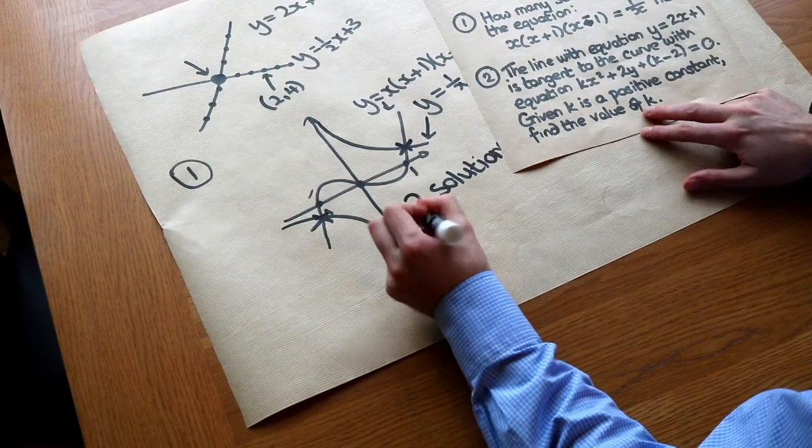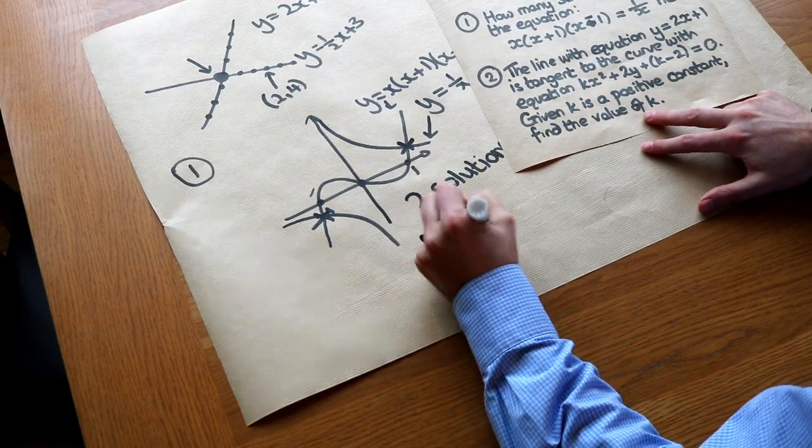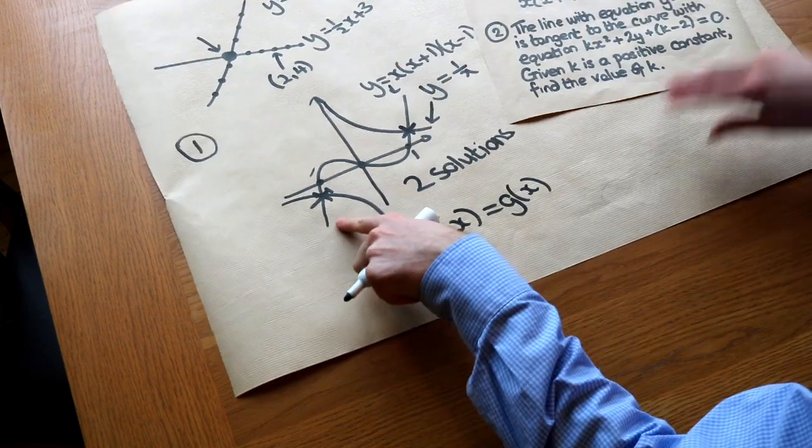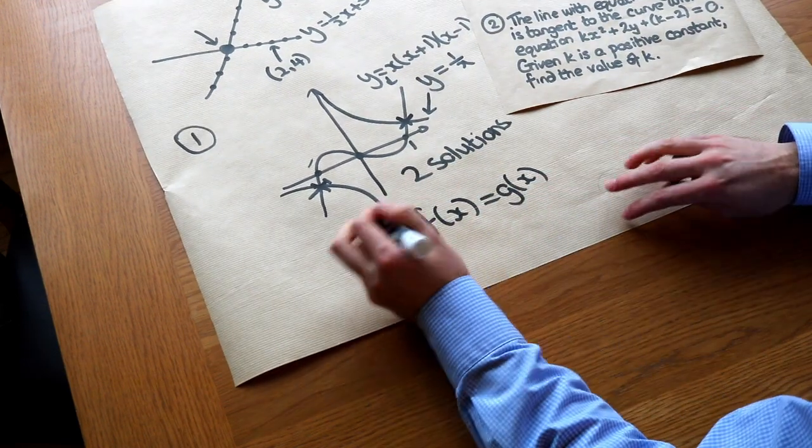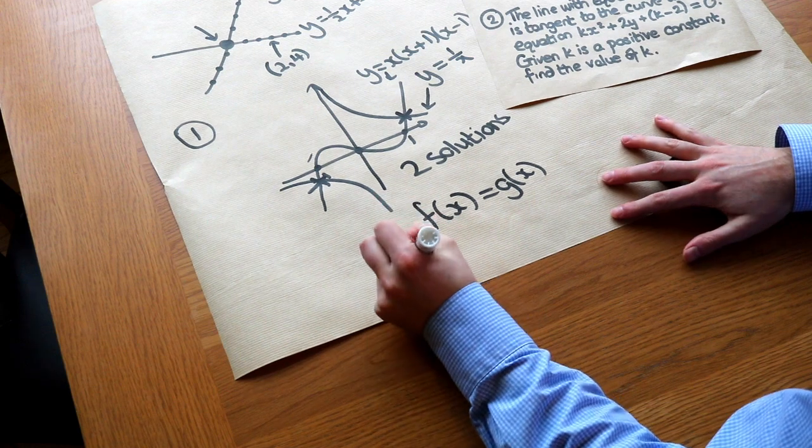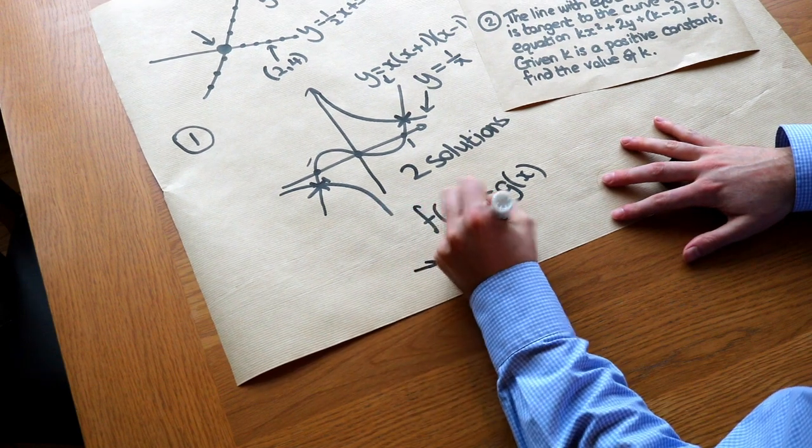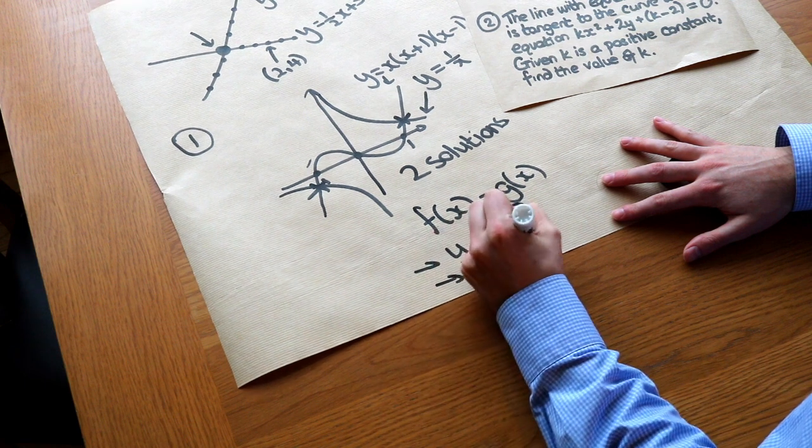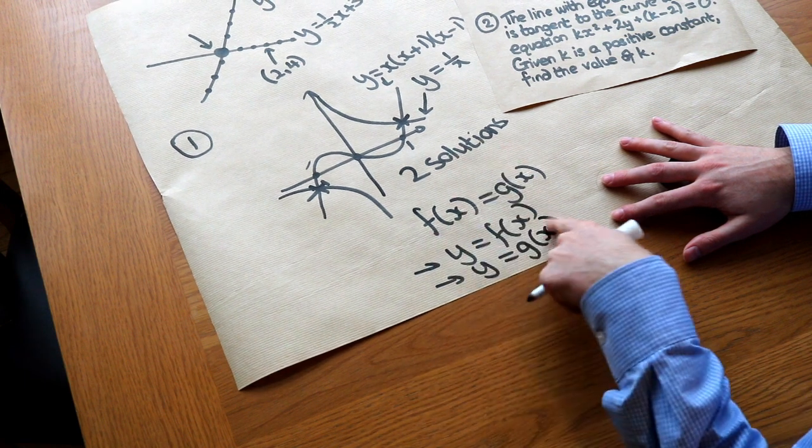So in general, if you've got f of x is equal to g of x, you've got two different expressions involving x. Then to solve this graphically, you can sketch y is equal to f of x and y is equal to g of x and then just observe where they intersect.